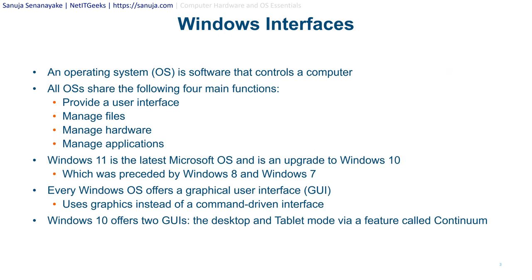Windows Interfaces. An operating system, also known as an OS, is software that controls a computer. All operating systems share the following four main functions: they provide a user interface, also known as a GUI, or sometimes a terminal; manage files; manage hardware; and manage applications.